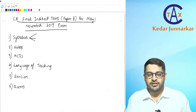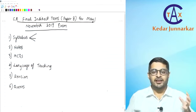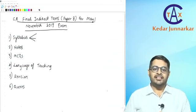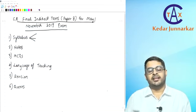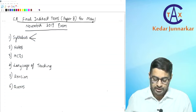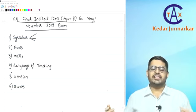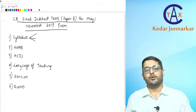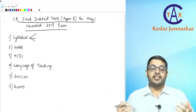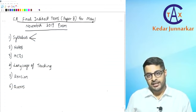Good morning. Welcome to this batch for the May and November 2019 exam. In this session we are going to start with CA Final Indirect Tax, which is Paper 8. It is for 100 marks and is a compulsory paper for CA Final. Before we start with the actual syllabus, for the next 10-15 minutes let's quickly go through the different things which are there for Indirect Tax.